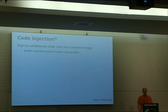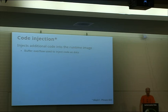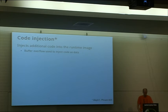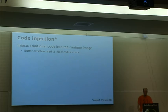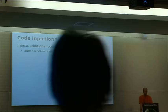The first attack vector we all got very used to was code injection, which is one of the very nice and simple exploits that injects additional code into the runtime image of an application through some attack vector. Maybe we can use a buffer overflow to inject code into the runtime image, but the code is injected as data, so the processor will just execute that given data as new code and in the end the attacker will have control over the application.